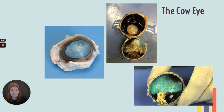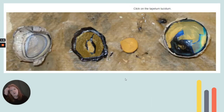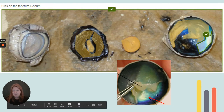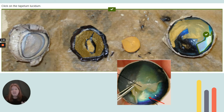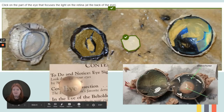Then we did a cow eye dissection. Here you can see the cow eye as it comes out, and here are a couple of parts of the eye after it's been cut in half. I'm going to focus on a couple of questions. The tapetum lucidum — it's this iridescent-looking structure. It's not in our eyes; it's in cow eyes and cat eyes. Anyone where you shine light and their eyes sort of glow — that helps them see better at night. The part that focuses the light on the retina is the lens.